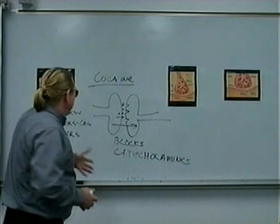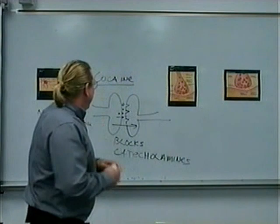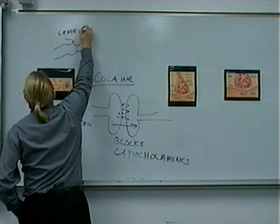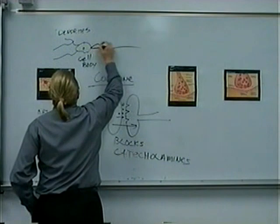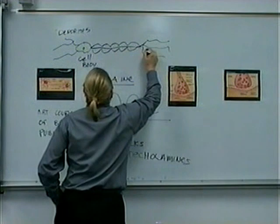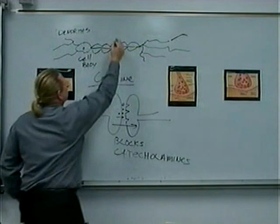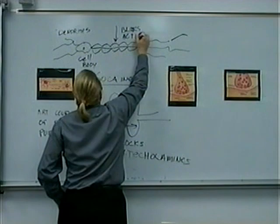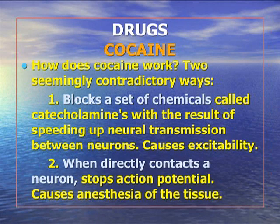Why would cocaine be used in surgery if it speeds everything up? It has a second effect. When applied directly to tissue like the nose or eye, cocaine blocks and interferes with the action potential itself — it literally stops the electrical firing. So on one hand it speeds up transmission systemically, but when applied directly to tissue, it works as a wonderful anesthetic, paradoxically.